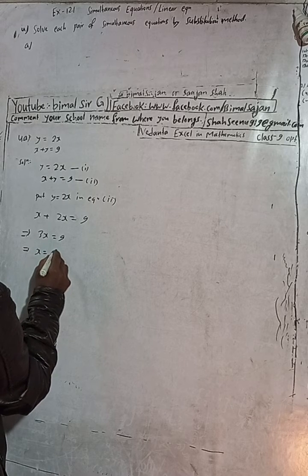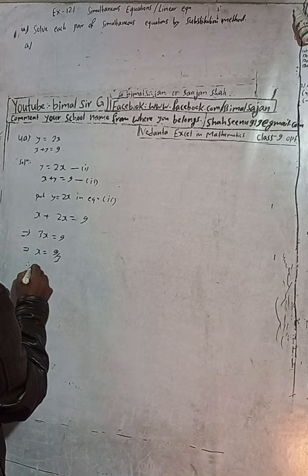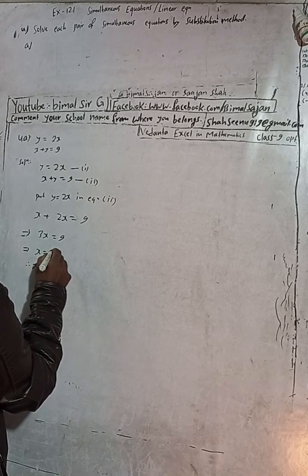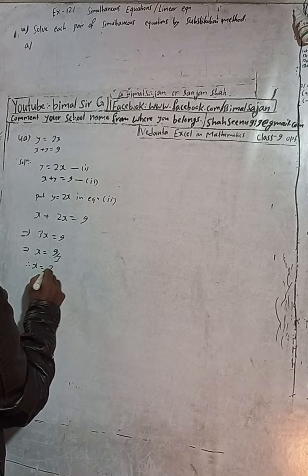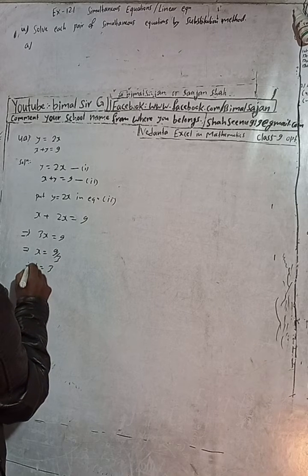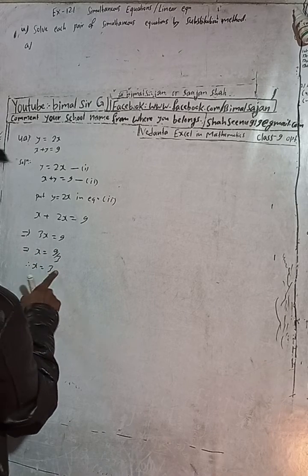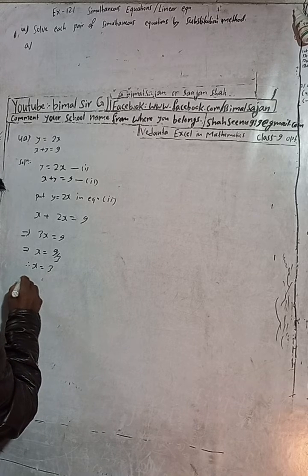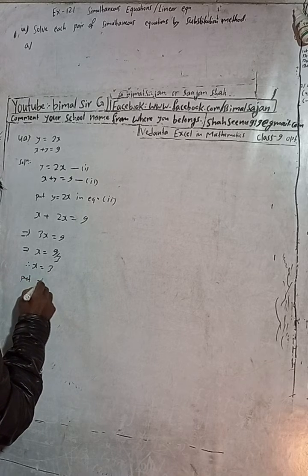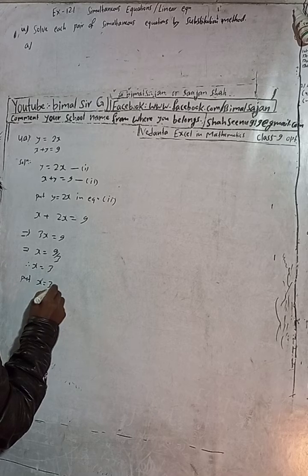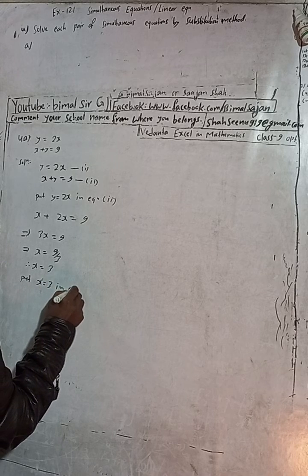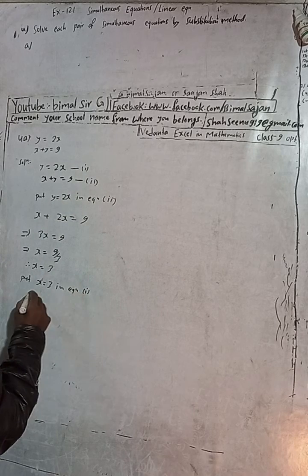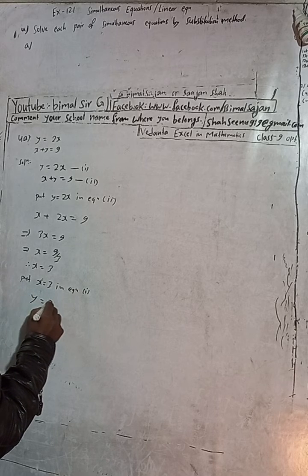So 3x = 9, which implies x = 9 divided by 3. Therefore x = 3. This is our x value.